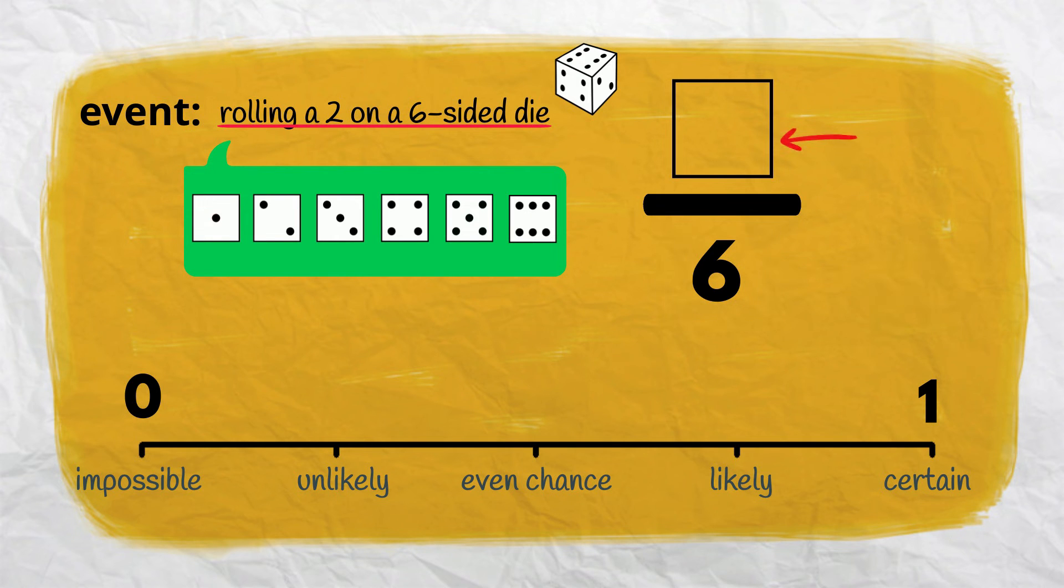The numerator, the number at the top, shows the number of ways the event can happen. In this case, there is only one possible way our event can happen, by rolling a 2, so our numerator is 1.